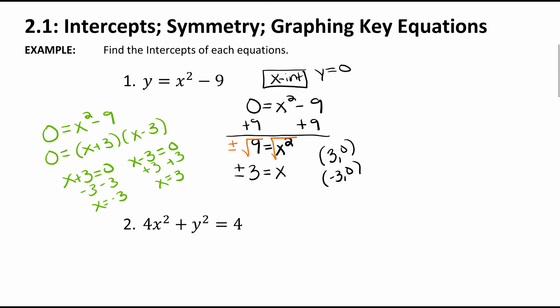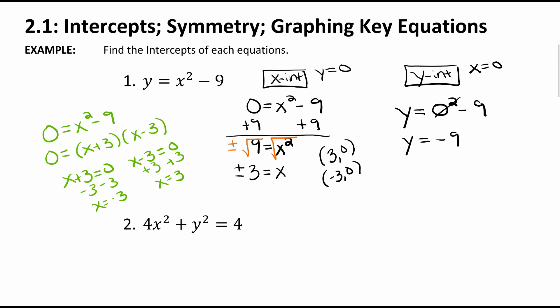Now let's find the y-intercept. For the y-intercept, you set x equal to zero. So y equals 0 squared minus 9. Zero squared is just 0, so that goes away and you're left with y equals negative 9. That's already solved. Our y-intercept point is (0, −9).